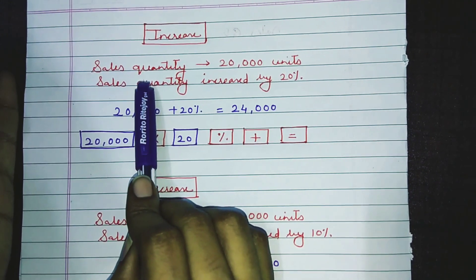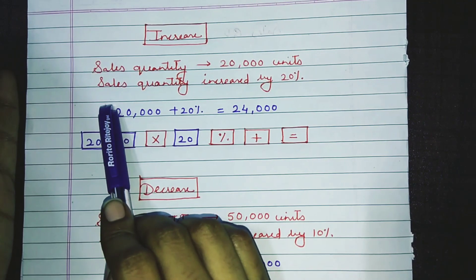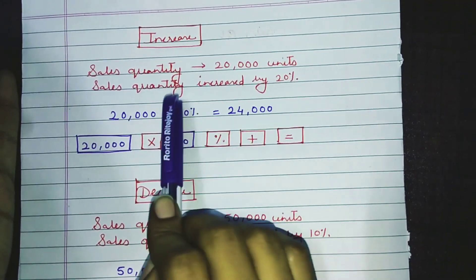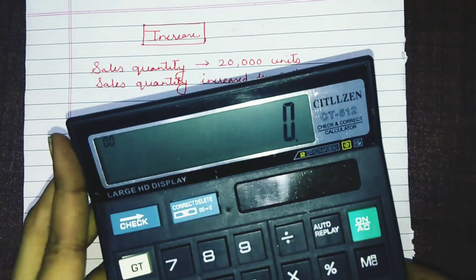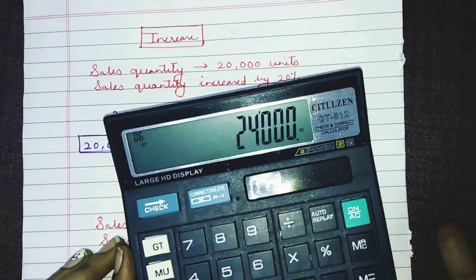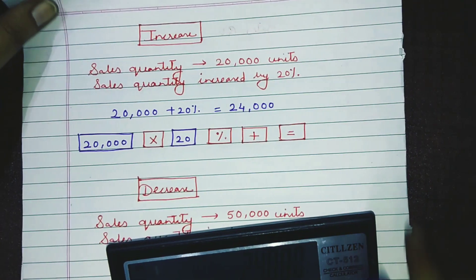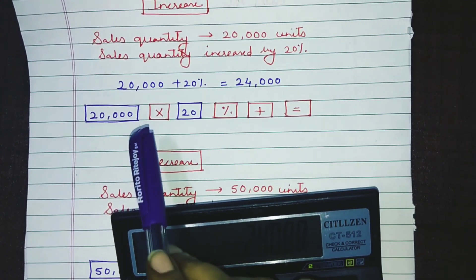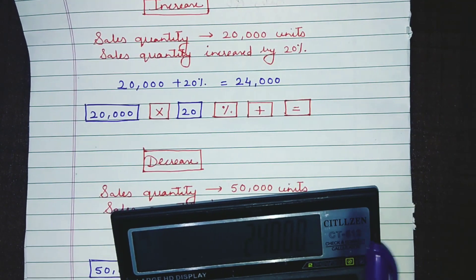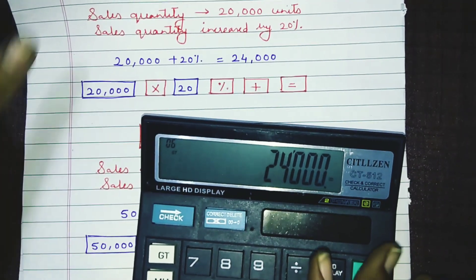Usually they ask you for increase and decrease in sales quantity or sales price. Suppose they have given you a sales quantity of 20,000 units and instructions that the sales quantity has increased by 20 percent. Even within 10 seconds you can compute this answer. In your working note, you simply write: 20,000 plus 20 percent equals 24,000. But how do you compute that on your simple calculator?